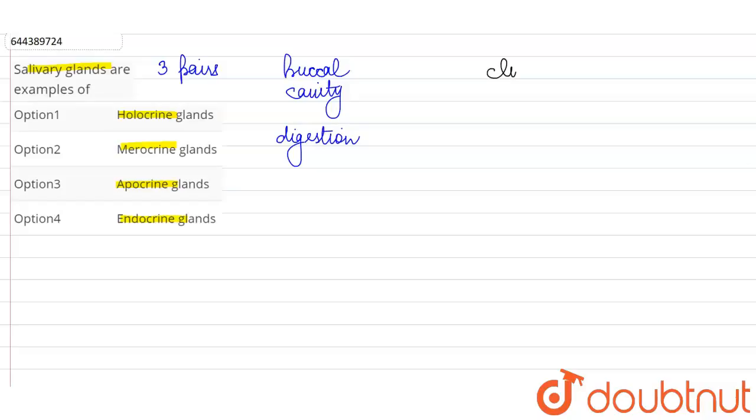When we talk about glands, a gland is like a cluster of cells, epithelial cells, which are producing and secreting certain substances. Mainly, glands can be divided into two categories.